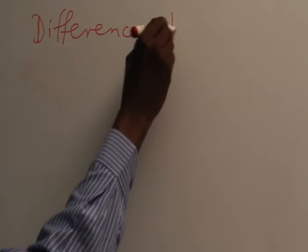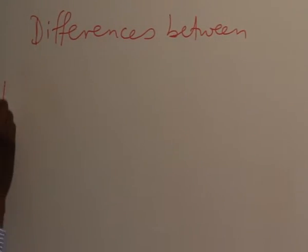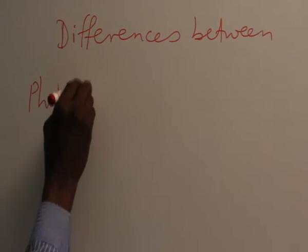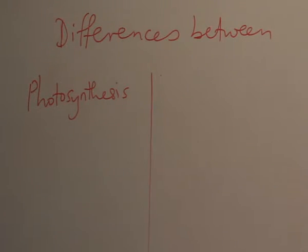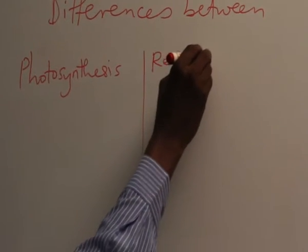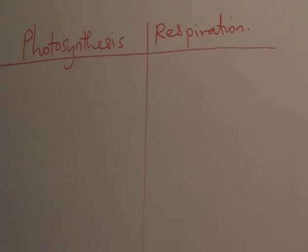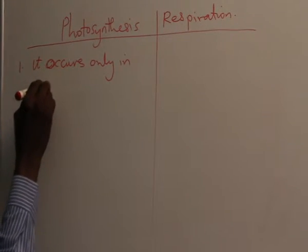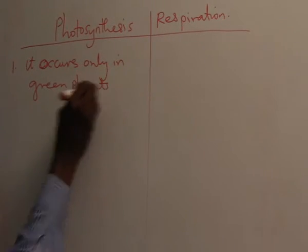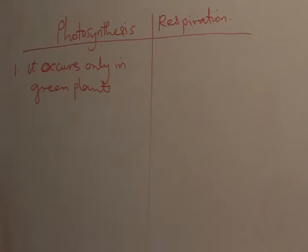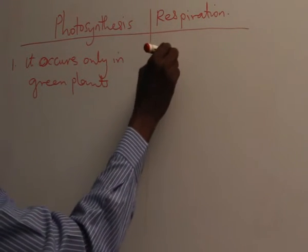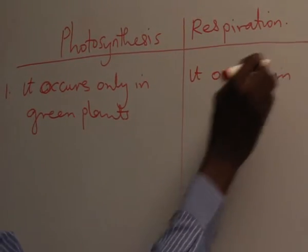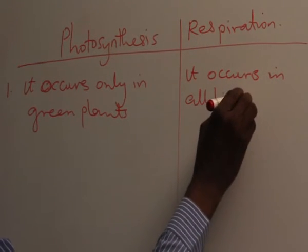What are the differences between photosynthesis and respiration? The first thing we should know: photosynthesis occurs only in green plants or photosynthetic organisms, whereas respiration occurs in all living organisms.